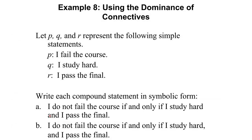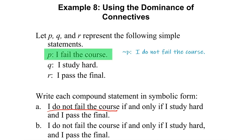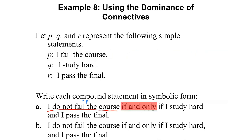Notice there are several connectors used here. 'I do not fail the course' means negation of P, so we have 'not P.' Then we have 'if and only if,' which is the most dominant connective in the level of dominance. The simple statements after it are grouped together: 'I study hard and I pass the final,' which is 'Q and R.'